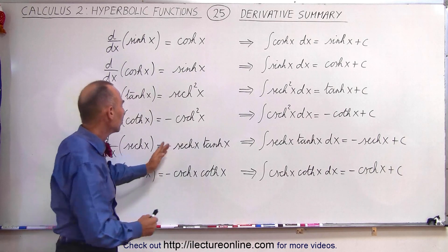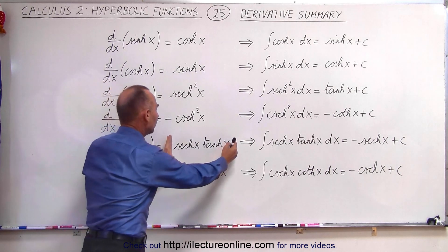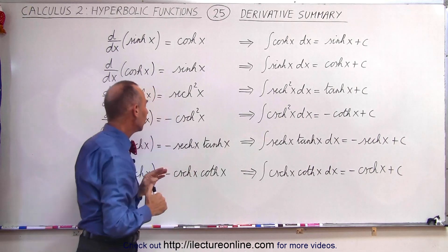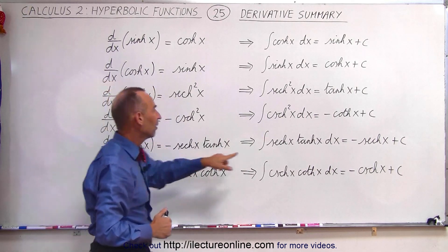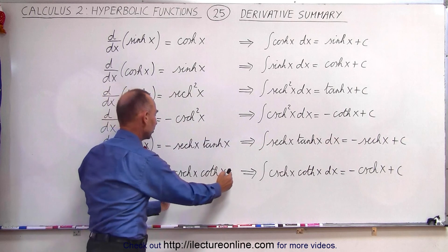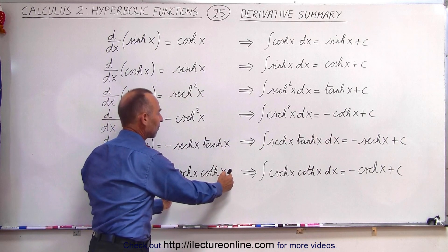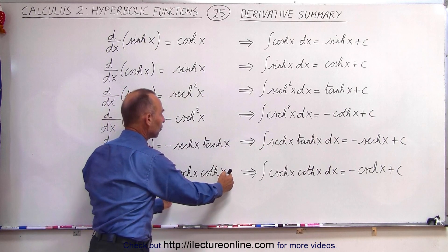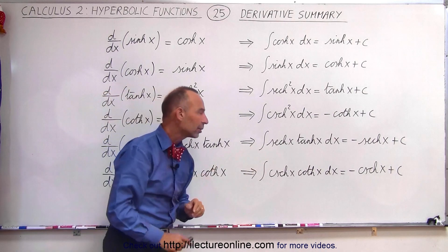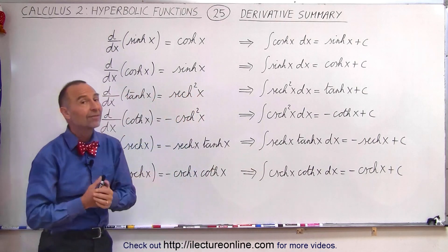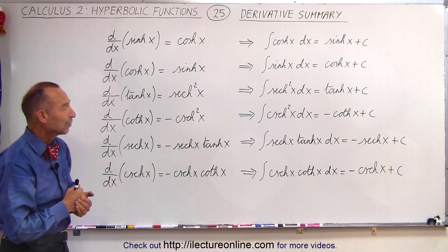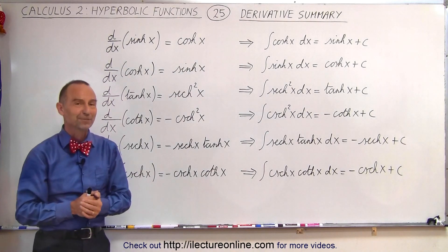Then if we take the integral of the hyperbolic secant times the hyperbolic tangent, we get back the negative of the hyperbolic secant, and if we take the integral of the hyperbolic cotangent times the hyperbolic cosecant, we get the negative of the hyperbolic cosecant. So it's nice to know that it also works in reverse. That's how it's done.